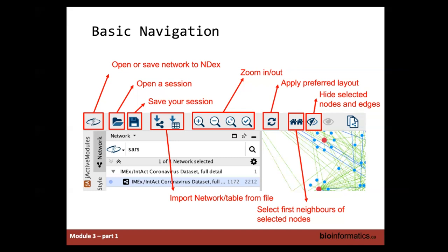On the other side of the toolbar, you also have the ability to quickly import network tables and networks, save your session, open a session, and search within NDEx. NDEx is a library of networks — if somebody publishes a paper and publishes a network, they can put it on the cloud so that readers can pull that network directly into Cytoscape and work with it. It's like a library of networks, and we're going to use that in a second.